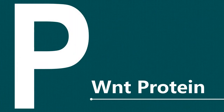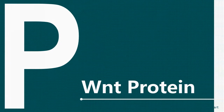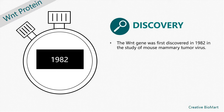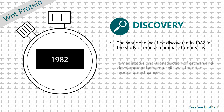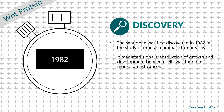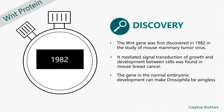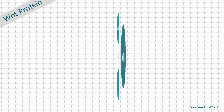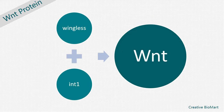We are going to introduce WNT protein. The WNT gene was first discovered in 1982 in the study of the transcriptional mechanism of mouse mammary tumor virus. A protein-mediated signal transduction of growth and development between cells was found in mouse breast cancer. The gene in normal embryonic development can make Drosophila be wingless. The coding gene of the protein was called INT1. Combining the two words wingless and INT1, it became known as WNT.